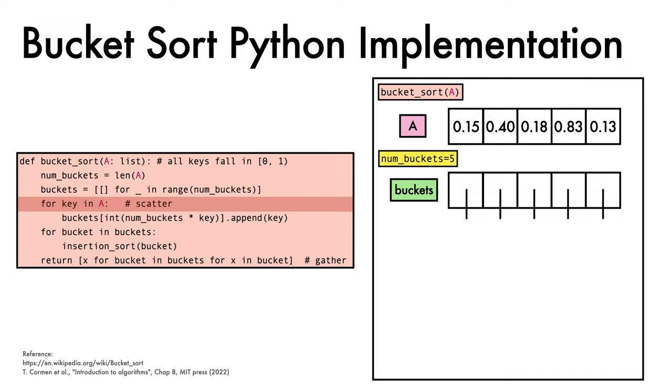We then come to our scatter operation, where we start from the zeroth key and append it to the corresponding bucket, which in this case is at index 0. We go to the next key and send it to the appropriate bucket, which here is the bucket with index 2.